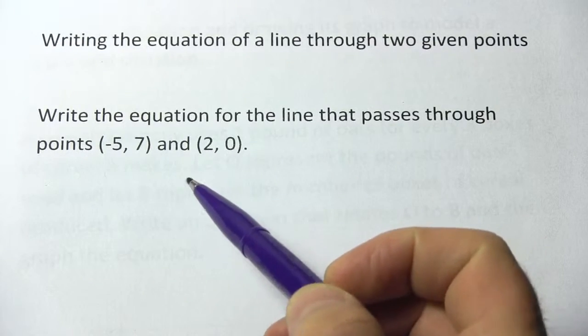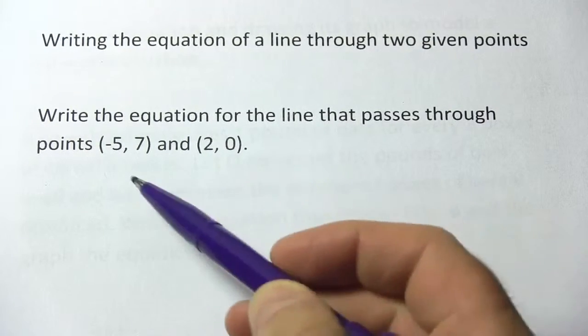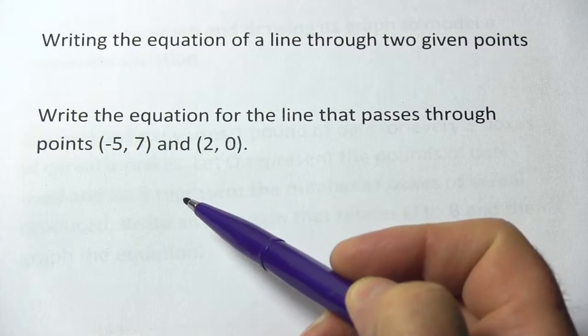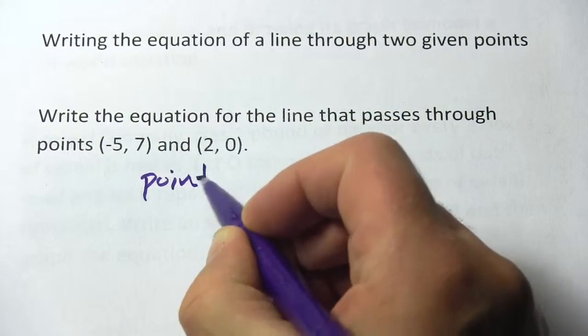Here, we're being given two points, and we need to write an equation for a line that passes through those points. Here, I'd probably use the point-slope form.